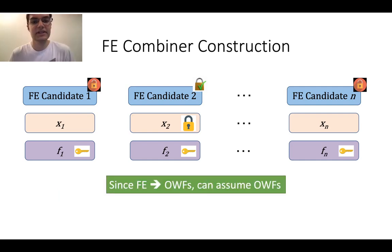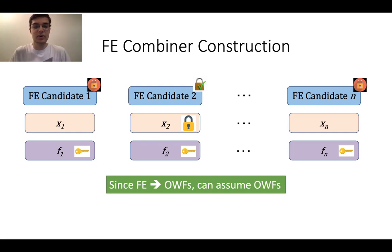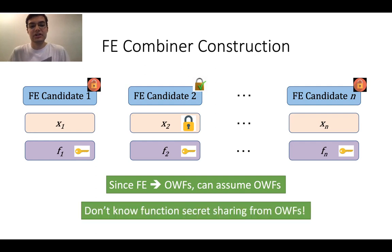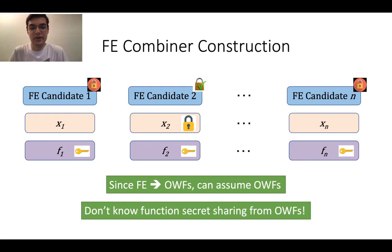Moreover, since the existence of functional encryption implies the existence of a one-way function, and there exist unconditional one-way function combiners, we can assume the existence of one-way functions in our FE combiner construction and still get an unconditional FE combiner. Unfortunately, we don't know how to build such an FSS scheme assuming only one-way functions.